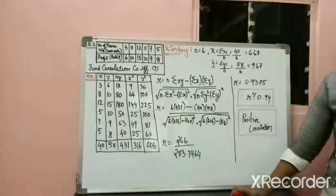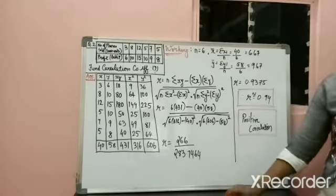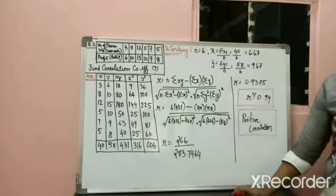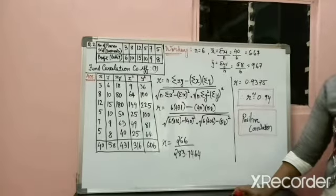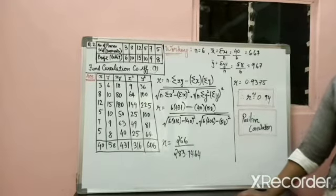Now let us solve one more sum. Let me read out the question for you. I have written only the data, so let me read out the question. The question says the details of monthly sale of mobile phones in 1000 units and its profit in lakh for the last 6 months for a company making mobile phones are given below. So we have to compute the correlation coefficient between these two variables.